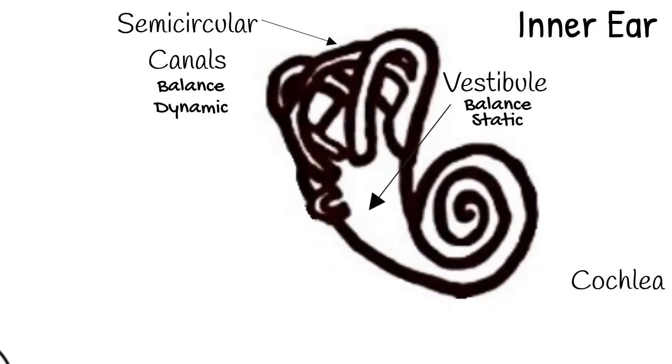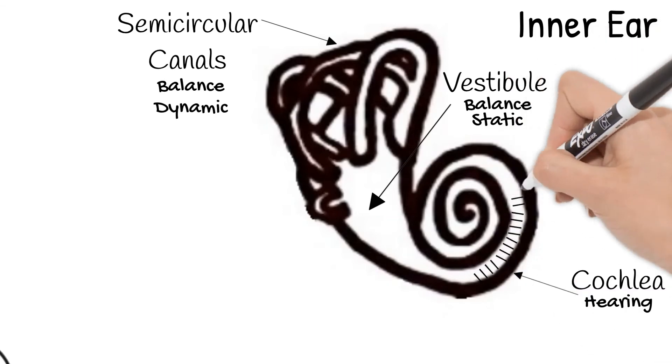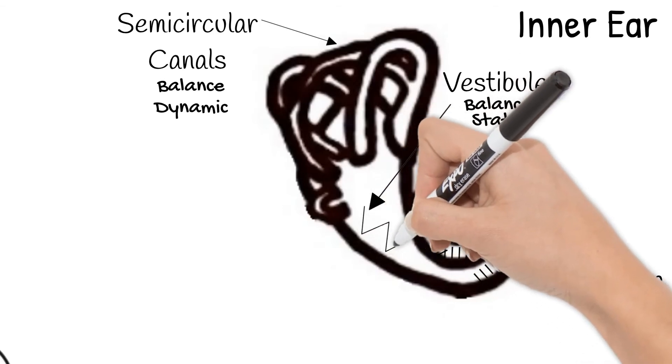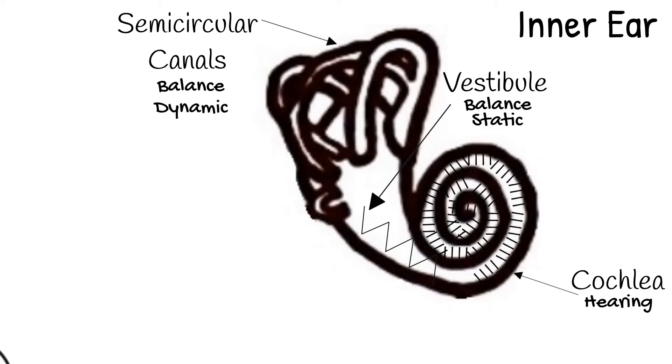The cochlea is the last part we'll look at and its job is hearing. The cochlea is also fluid filled and has specialized hair cells inside the coils. The stapes vibrating through the oval window of the cochlea causes the fluid inside to move. The fluid hits and bends these hair cells as it moves.